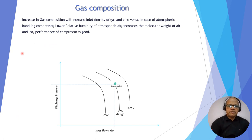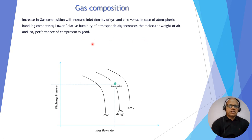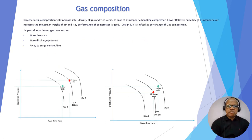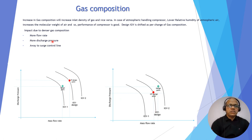Now, gas composition. At the design point, let's see the impact of gas composition. Higher gas composition means higher molecular weight, so the curve shifts upward — more flow, more pressure. Lower gas composition results in lower flow and lower pressure. Increase of gas composition means denser gas, more flow, more pressure, and away from the surge control line. Lower gas composition is the reverse case.